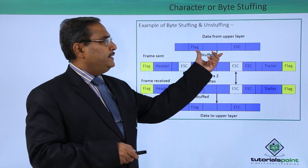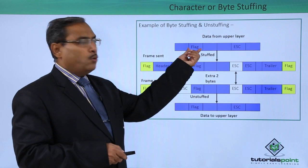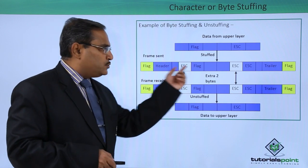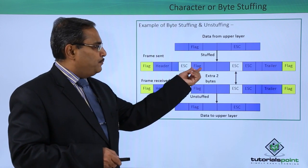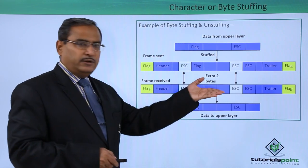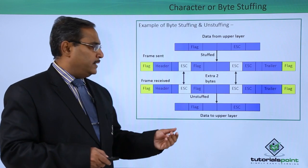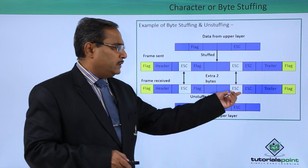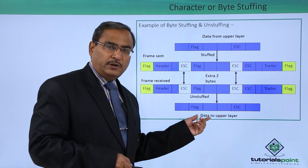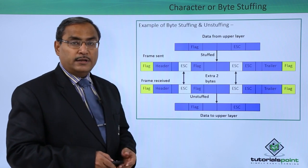Consider this example: this is the data from the upper layer. Here we have one flag and here we have one escape in the data. After stuffing, this escape is put before this flag and this escape is put before the existing escape. At the receiving end, this frame is received; the stuffed escape before the flag is taken out, and the stuffed escape before the original escape is also taken out. Ultimately, this frame is sent to the receiver's network layer — that is, the data to the upper layer.